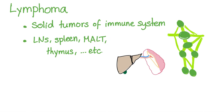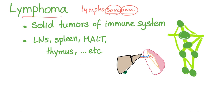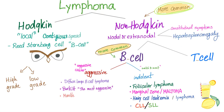Lymph is lymph; oma is a mass. The old name of lymphoma was lymphosarcoma. Why? Because oma means mass, and sarcoma is a tumor of connective tissue origin — not of epithelial origin. The lymph node is a connective tissue, blood itself is a connective tissue, and lymph is also a connective tissue. Lymphoma, baby.